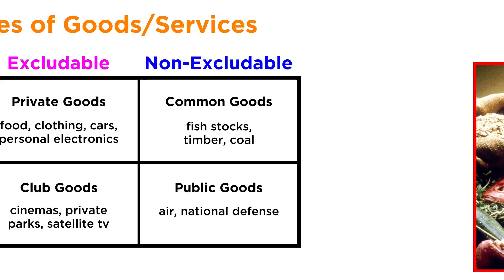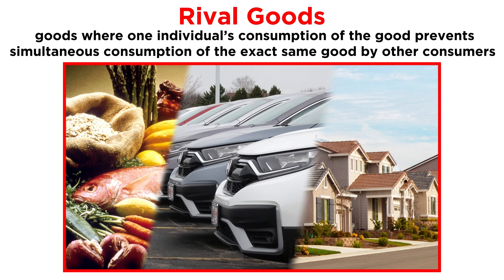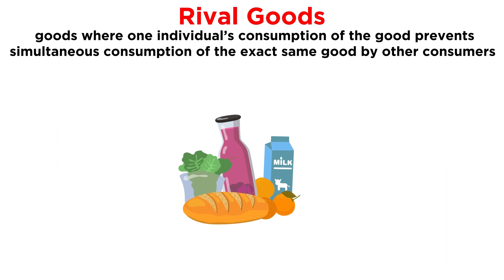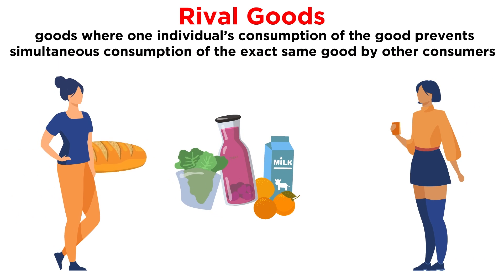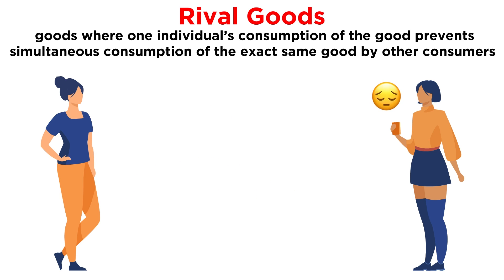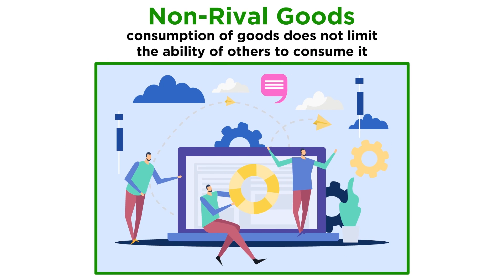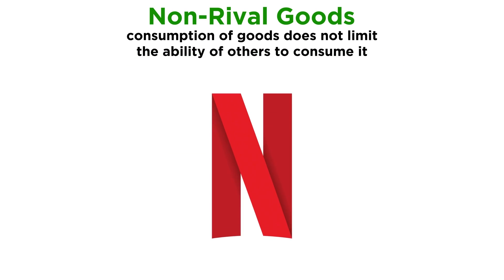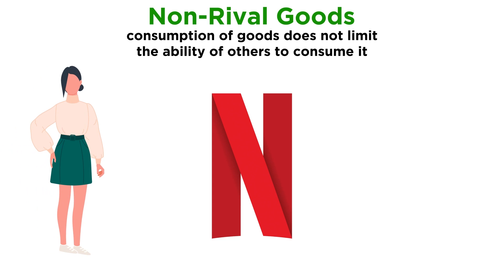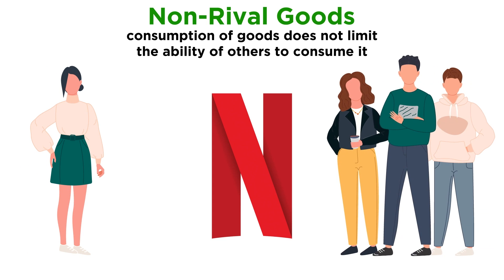Rival goods are those for which one individual's consumption of the good prevents simultaneous consumption of the exact same good by other consumers. Food is an obvious example — if you buy some food and eat it, nobody else can eat that food. Non-rival goods are just the opposite: consumption does not limit the ability of others to consume it. Think of Netflix — when you get a Netflix subscription, it in no way interferes with the ability of others to get a Netflix subscription.